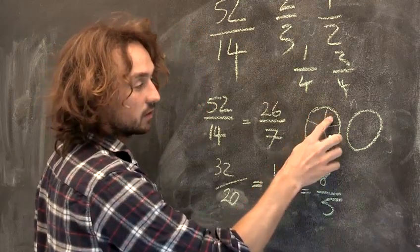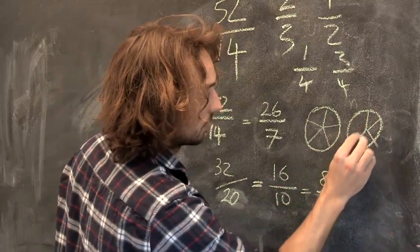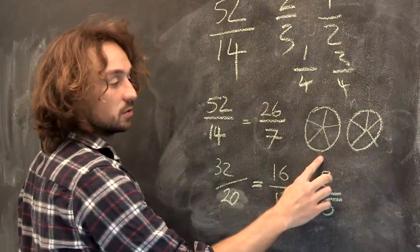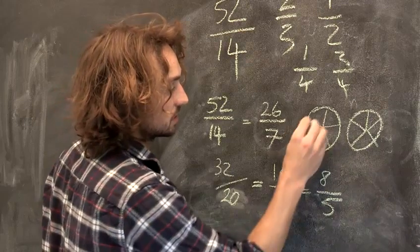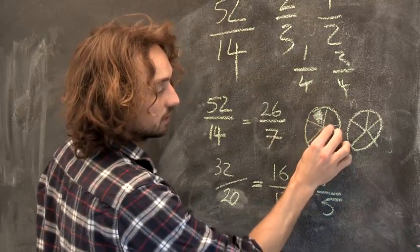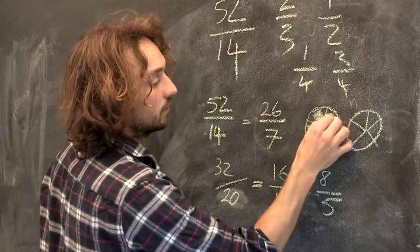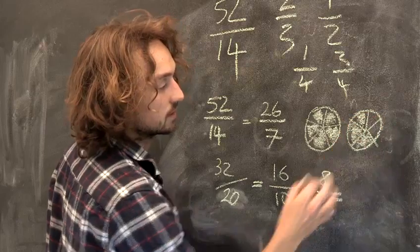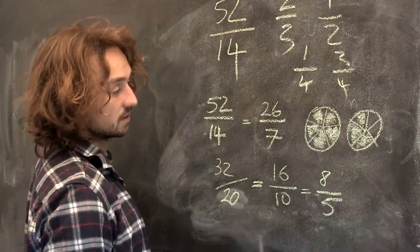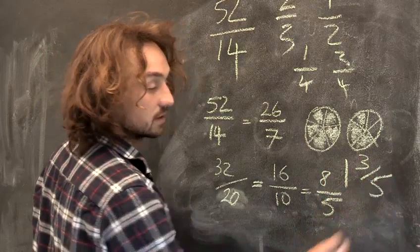Something like 1 fifth, 2 fifths, 3 fifths, 4 fifths, 5 fifths. And the same thing with the other pie. So divide 2 pies into 5. Now 8 fifths represents this. That's 1 fifth, that's 2 fifths, 3, 4, 5, 6, 7, 8. So 8 fifths is actually 1, 1 whole pie, and 3 fifths.